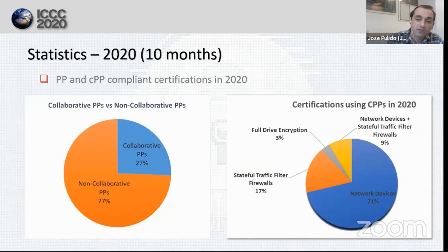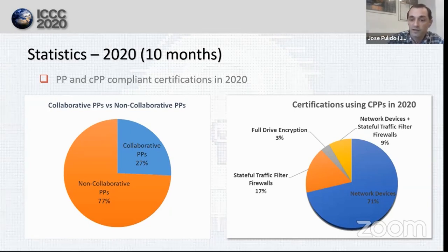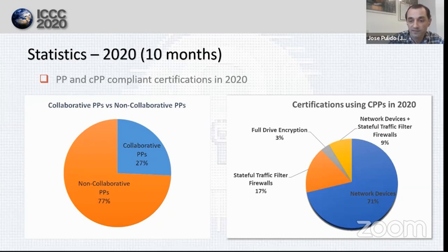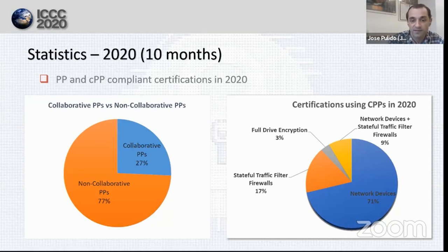We also collected information about the use of collaborative protection profiles. In 2020, 27% of the protection profiles that were used were collaborative PPs. If we take a look at the second pie chart, we will see which CPPs have been the most used ones. The winner is, of course, the CPP for network devices with a huge difference over the second. The second place is for the stateful traffic filter firewall CPP with 17%, and the third place is for full drive encryption with 3% this year.